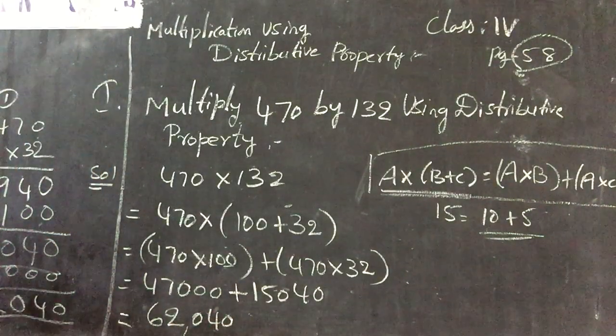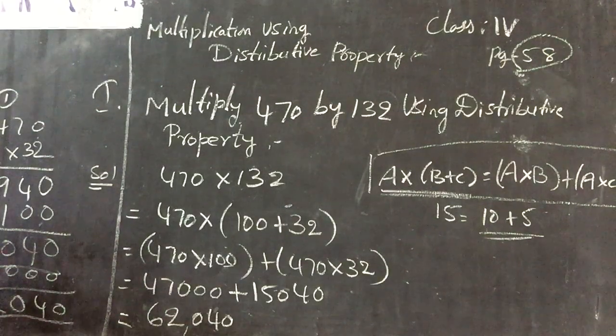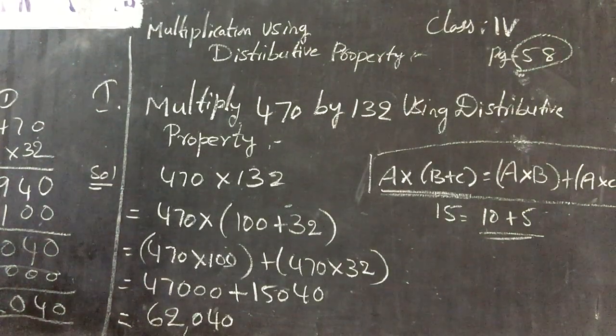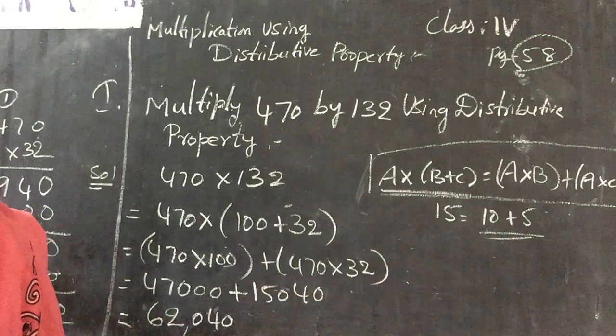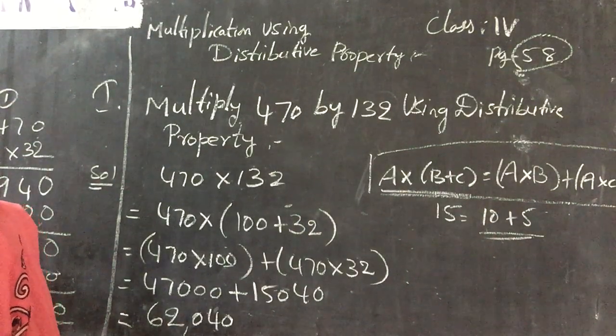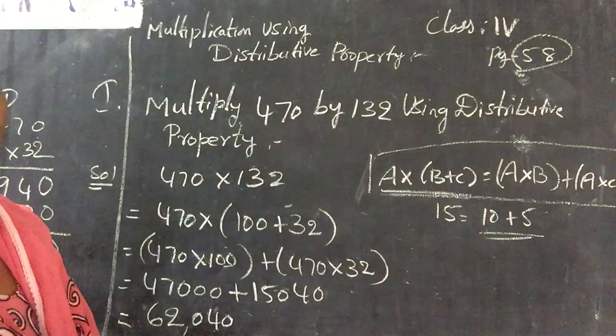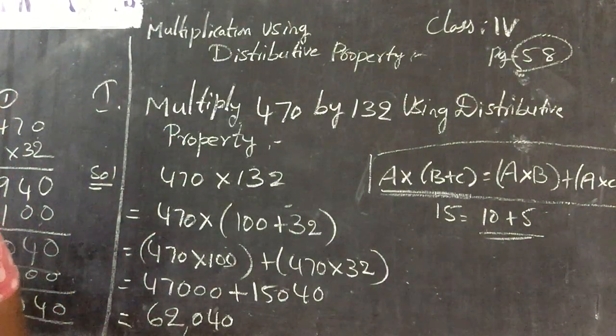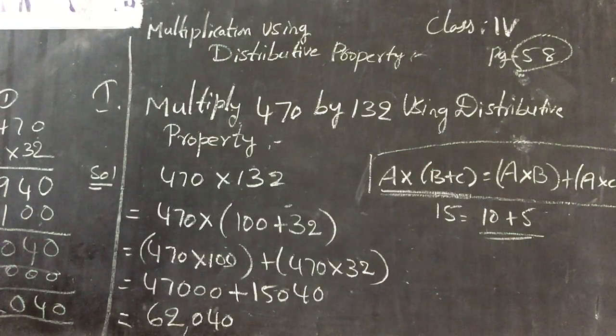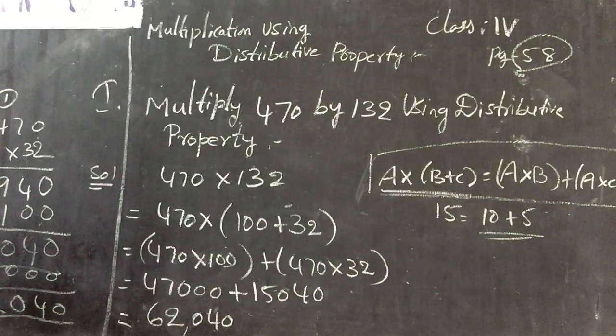Remaining sums, page number 58, section 1, first one, A, B, D, these 3 sums you have to do using the distributive property. Next, after completing this, you can write one more.